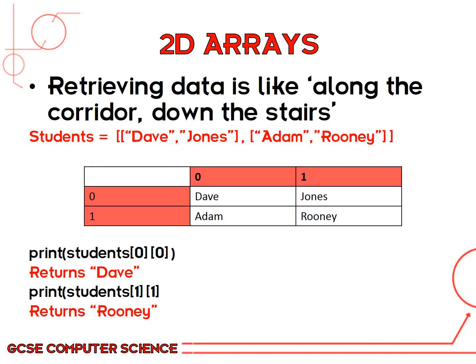The way to access data from a 2D array is by following the rule of along the corridor, down the stairs. Using the same list of lists we set up in Python — students equals Dave Jones, students equals Adam Rooney, and so on — set out in a table makes the data easier to understand. For example, print students[0][0] means along the corridor to 0, down the stairs to 0, which is Dave. Print students[1][1] would be along the corridor to 1, down the stairs to Rooney. That is how you access elements from a 2D array.